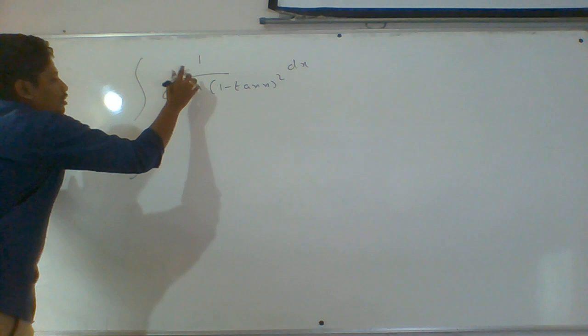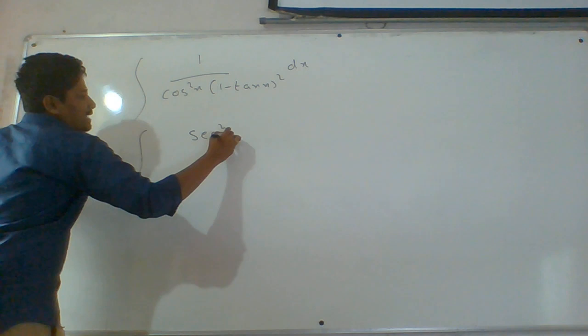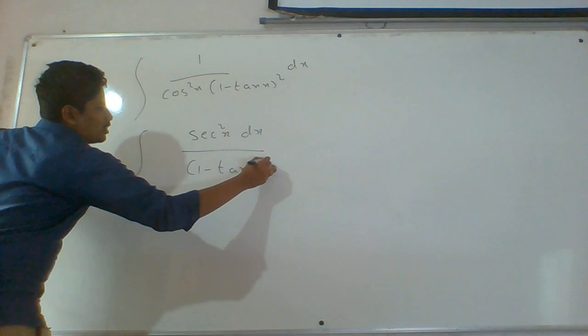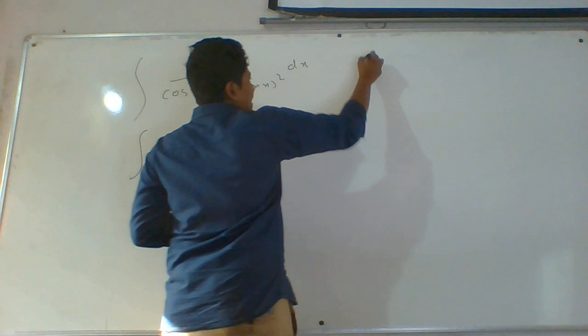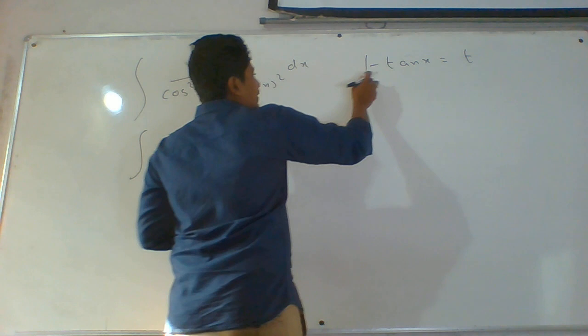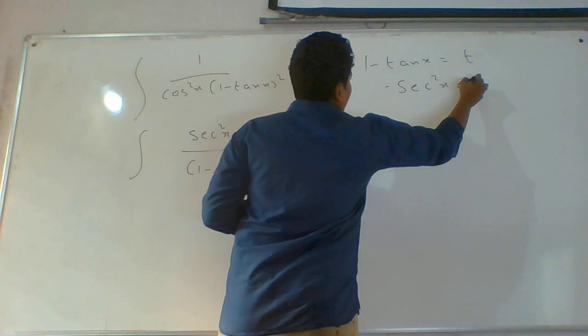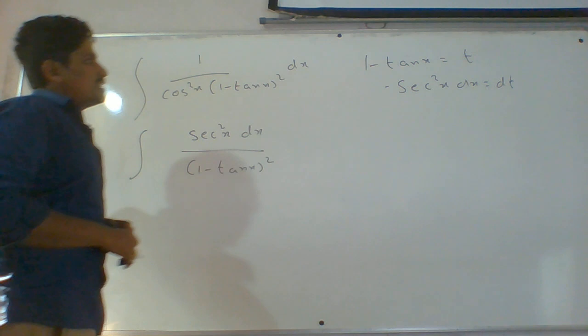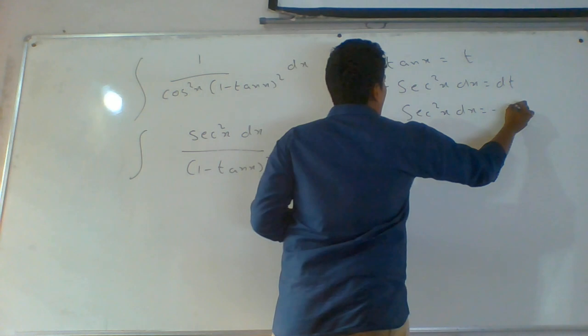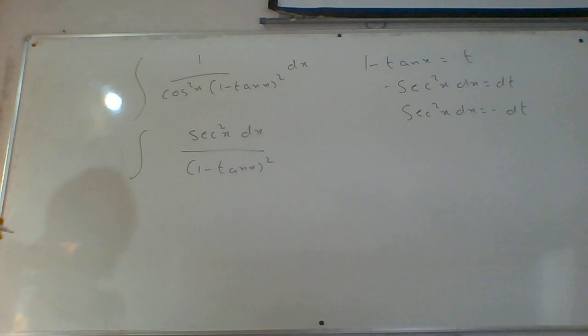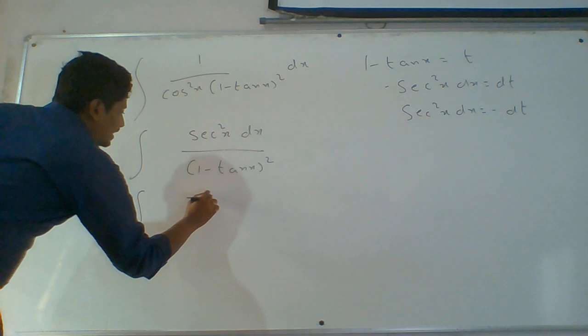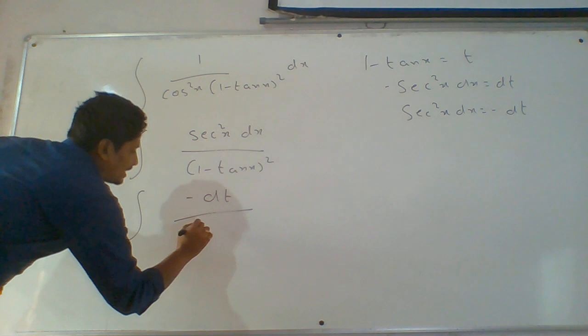Rewriting: sec square x dx by (1 minus tan x) whole square. Let 1 minus tan x equal t. The derivative gives minus sec square x dx equals dt, so sec square x dx equals minus dt. Converting the given function: sec square x dx is minus dt, and (1 minus tan x) whole square is t square.